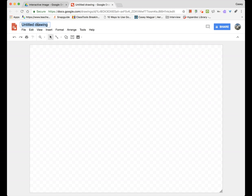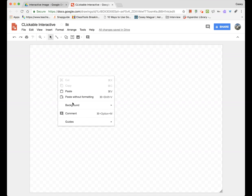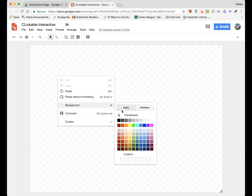I'm going to name this document Clickable Interactive and change the background color by right-clicking on the canvas, dropping down to Background, and choosing a color.